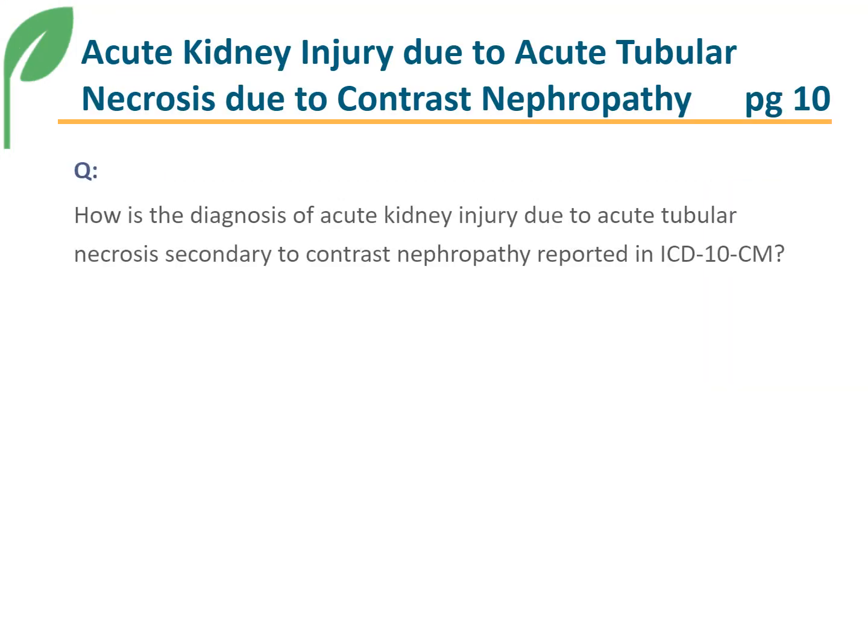This patient is diagnosed with acute kidney injury due to acute tubular necrosis secondary to contrast nephropathy. The question posed to Coding Clinic is: what are the appropriate code assignments for this diagnosis?